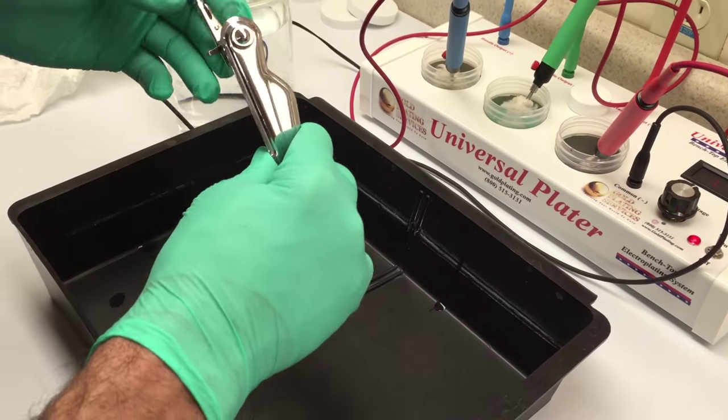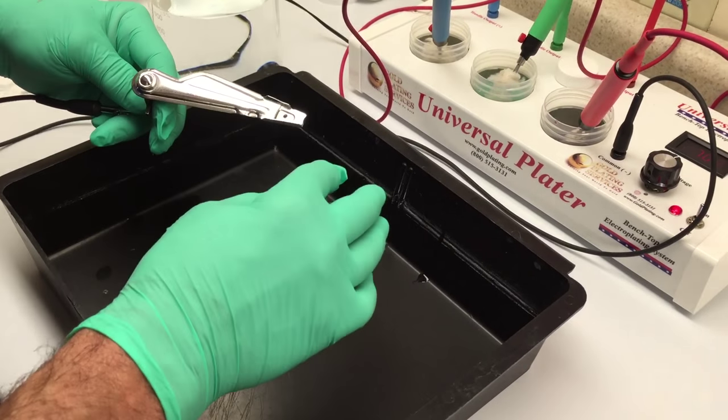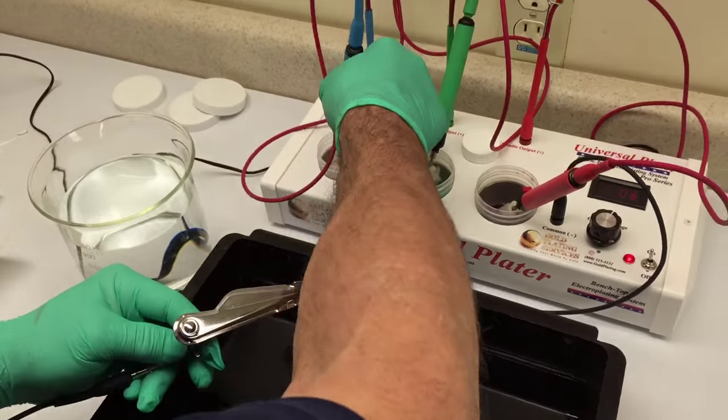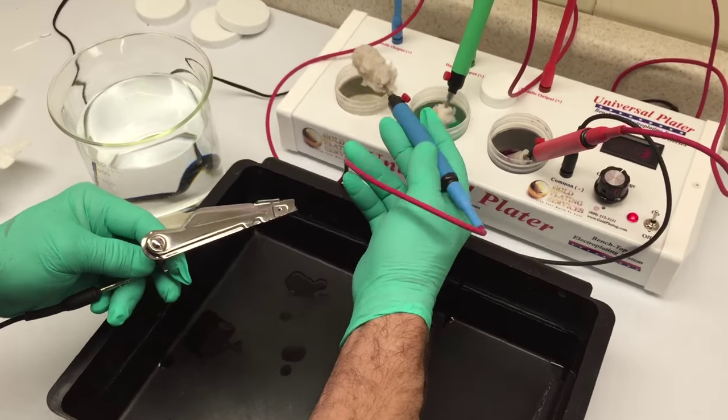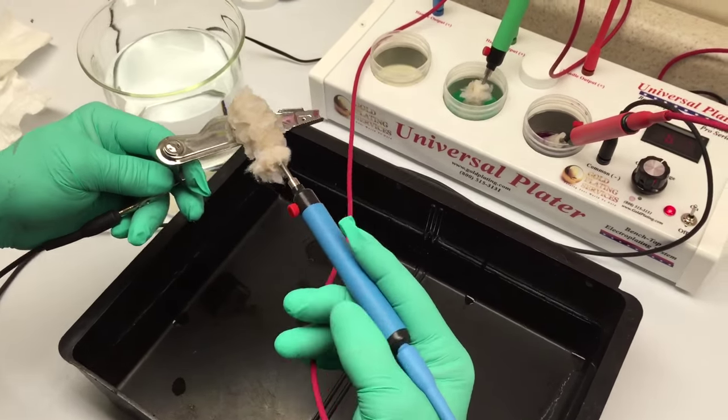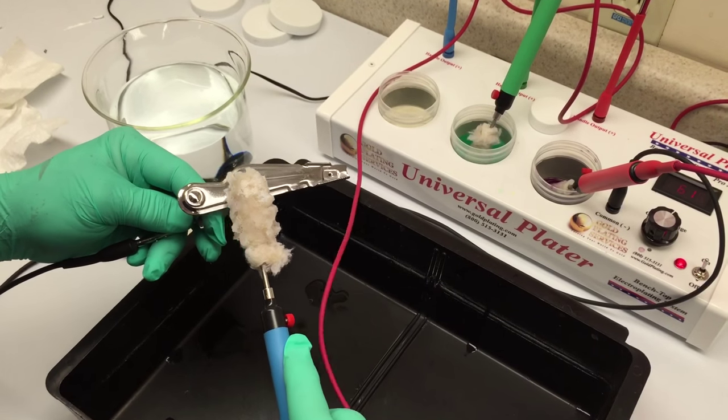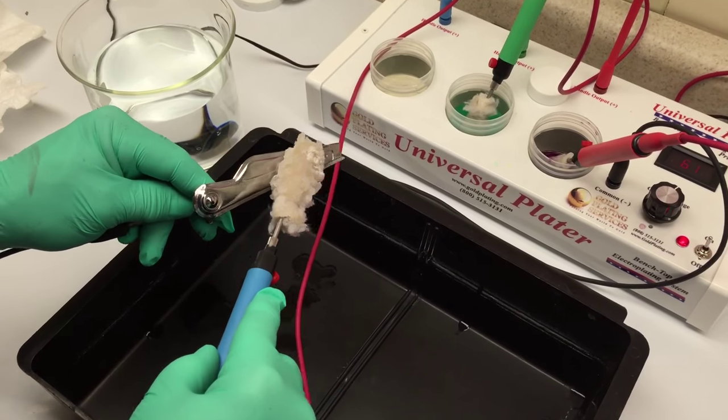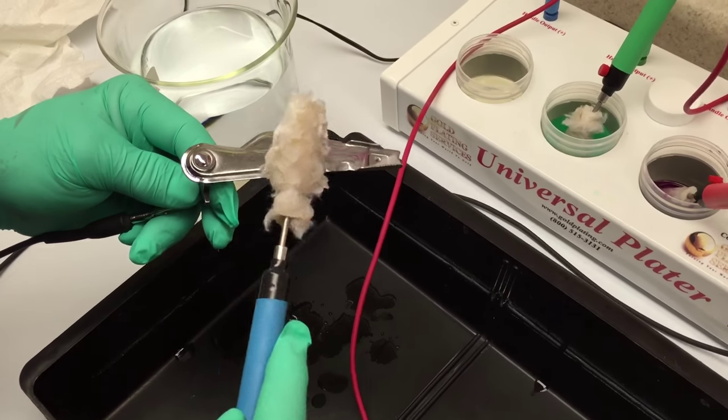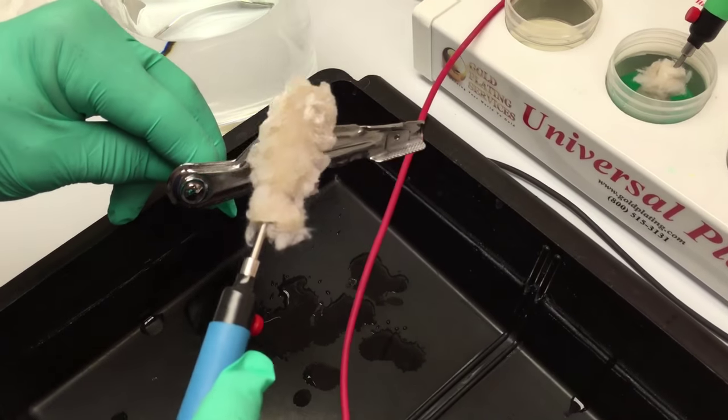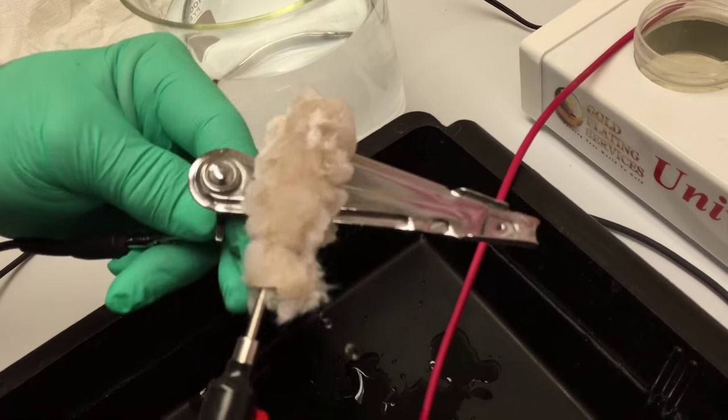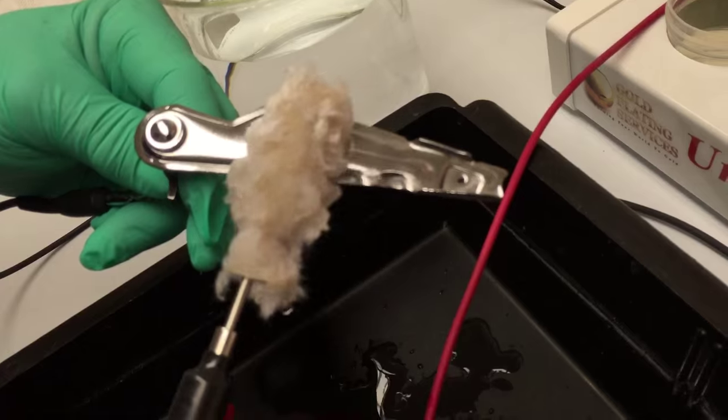I'm connecting my common lead to my work, which will give the work a negative charge. For the first step, I'll do the electro cleaning, and you can see that it kind of bubbles on the surface. What this does is like a final cleaning—it gets off any fingerprints or oil that could be on there and makes the surface really wet out well.